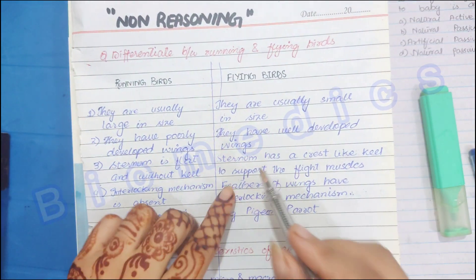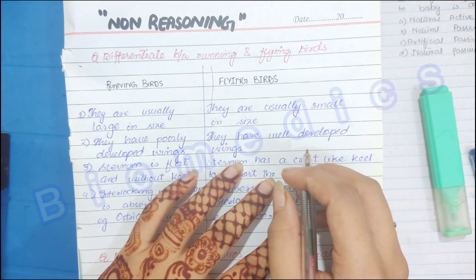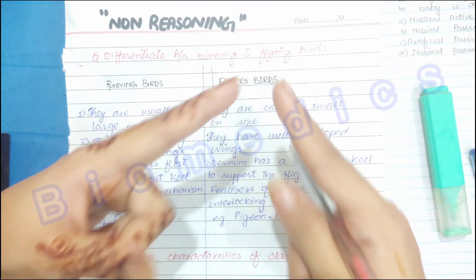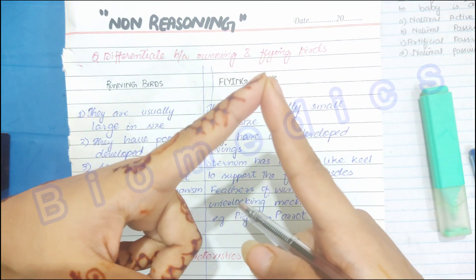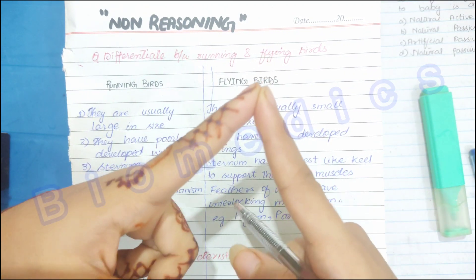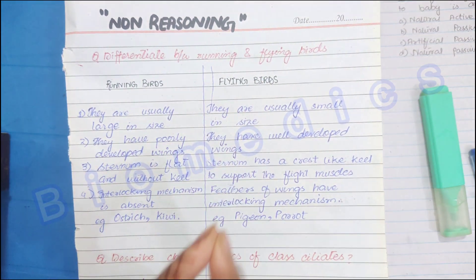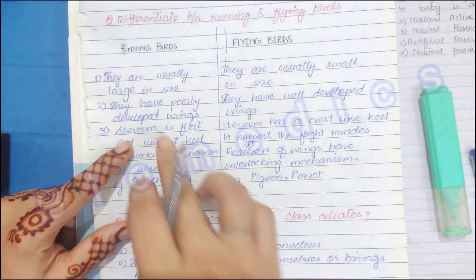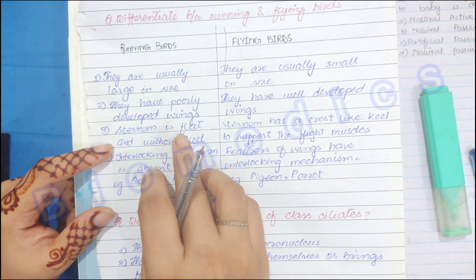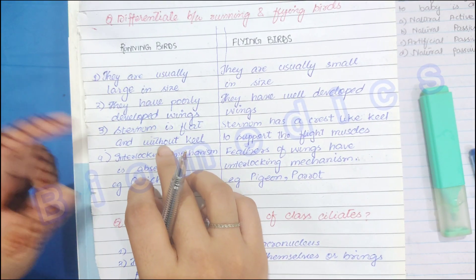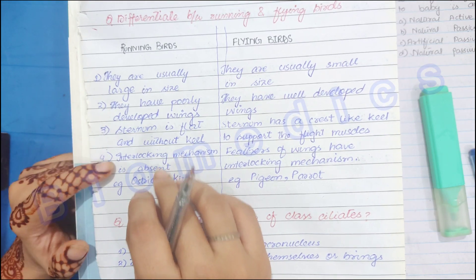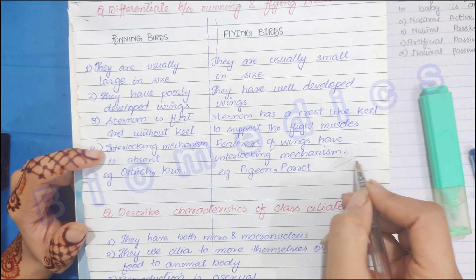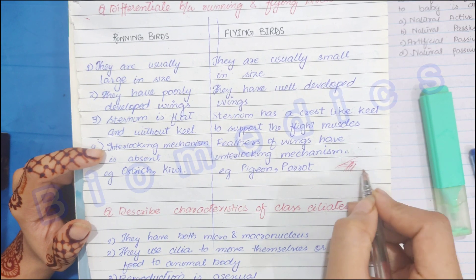Flying birds — like the pigeon — have a keeled sternum which helps with muscle attachment for flight. Running birds have a flat sternum with no keel and no interlocking mechanism. In flying birds, the feathers are interlocked together.